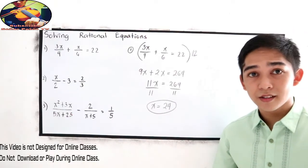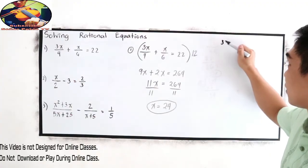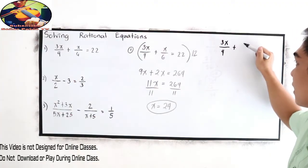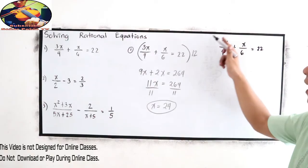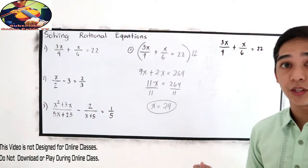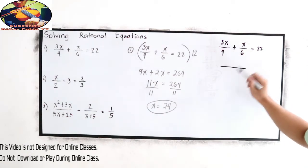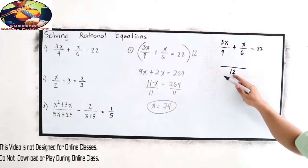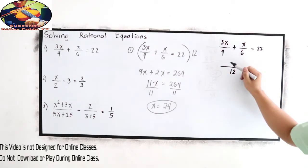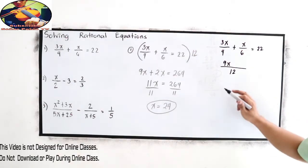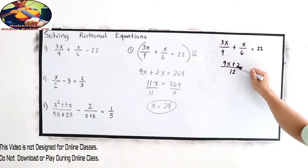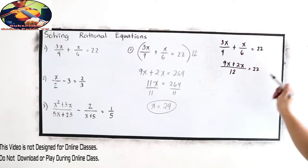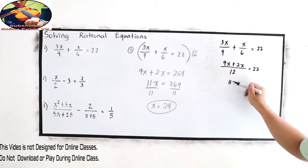Our second method: copy the given — 3x over 4 plus x over 6 is equal to 22. Make the left side of the equation a single expression. Get the LCD of 4 and 6, which is 12. 12 divided by 4 is 3, times 3x gives 9x. Copy the plus sign. 12 divided by 6 is 2, times x gives 2x. So we have 11x over 12 is equal to 22.